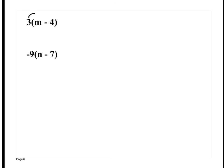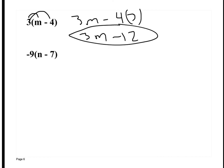We distribute the 3 out. Nothing changes, even though there's a subtraction sign. We just have a subtraction sign inside there. 3m minus 4 times 3. So my answer is 3m minus 12. I can't do anything else because I don't know what m is. So I just leave it as this.